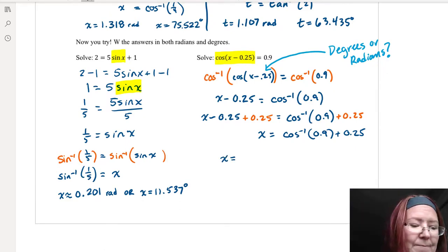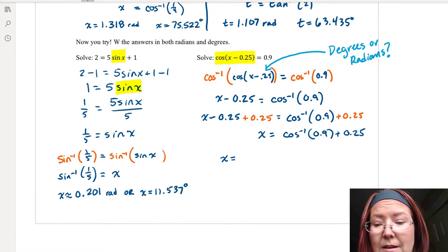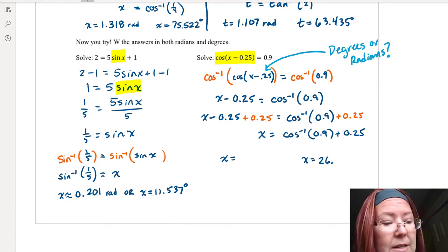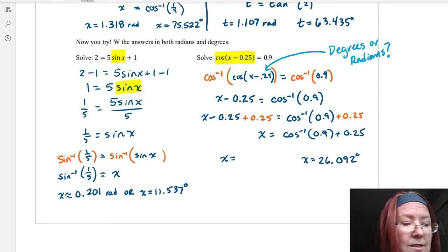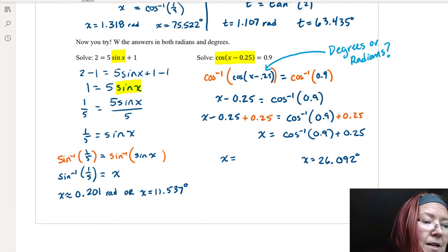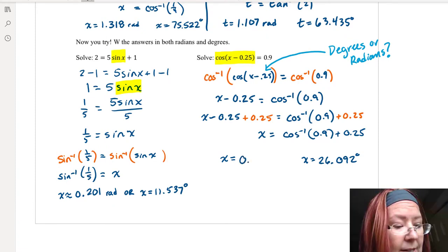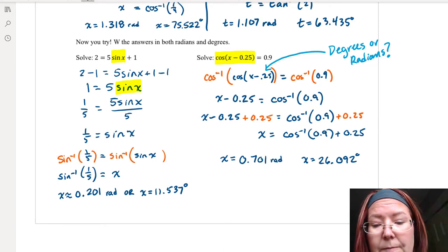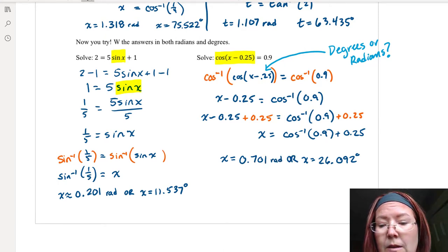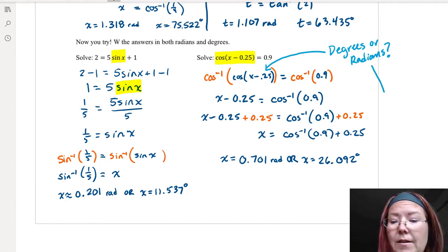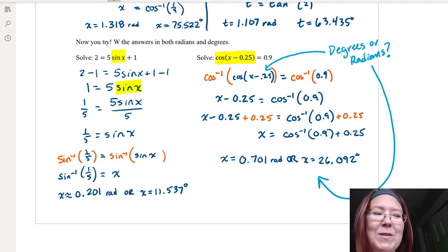So let's go ahead and find it starting with inverse cosine of 0.9 plus 0.25 in degrees, which is going to be 26.092 degrees. And then switching back to radians, I would have 0.701 radians. And again, I'm just going to make a little note here that this answer at the end depends on whether 0.25 was in degrees or radians at the beginning. It needs to be the matching one.